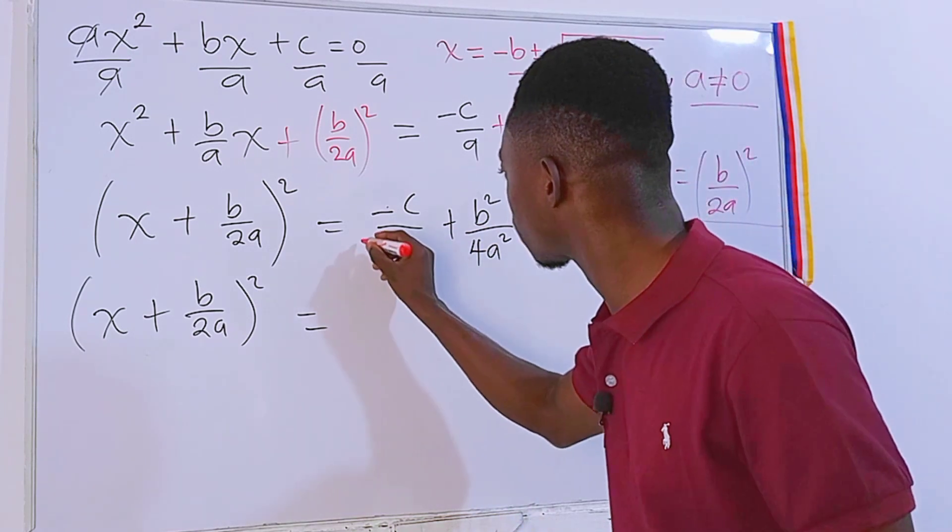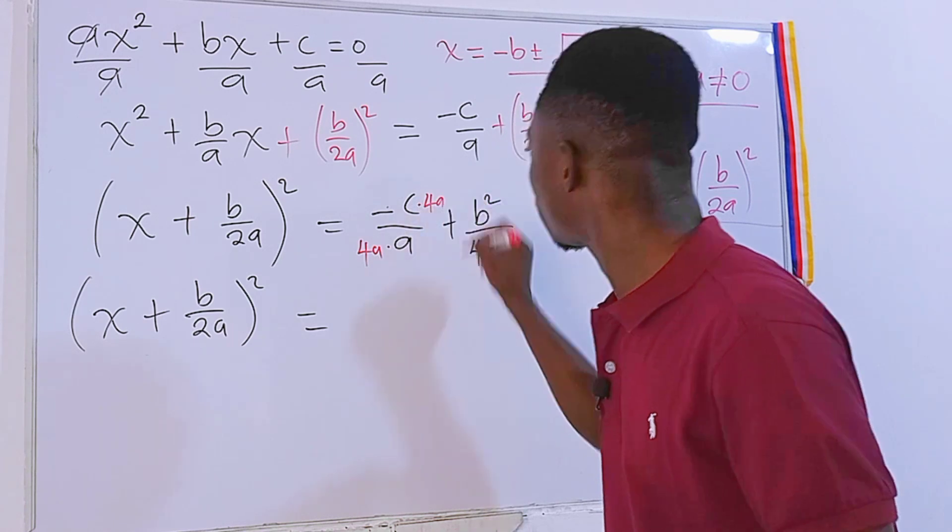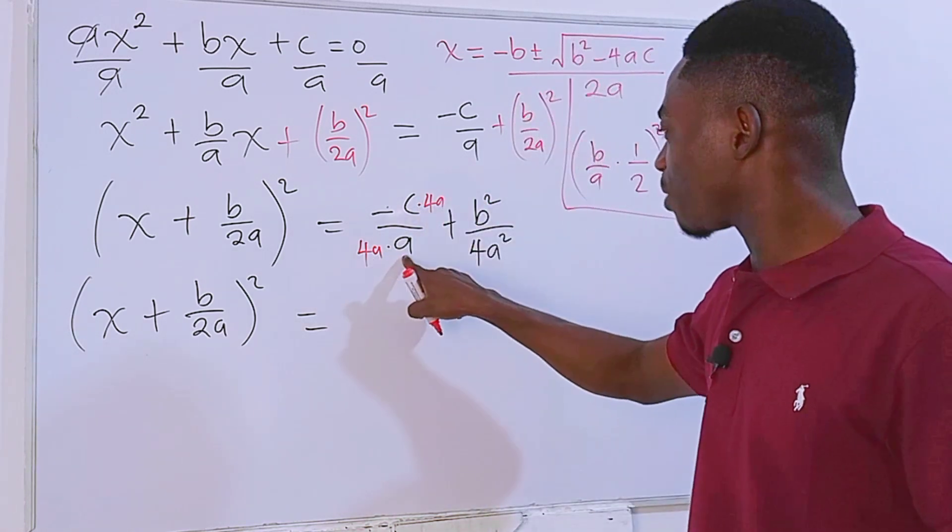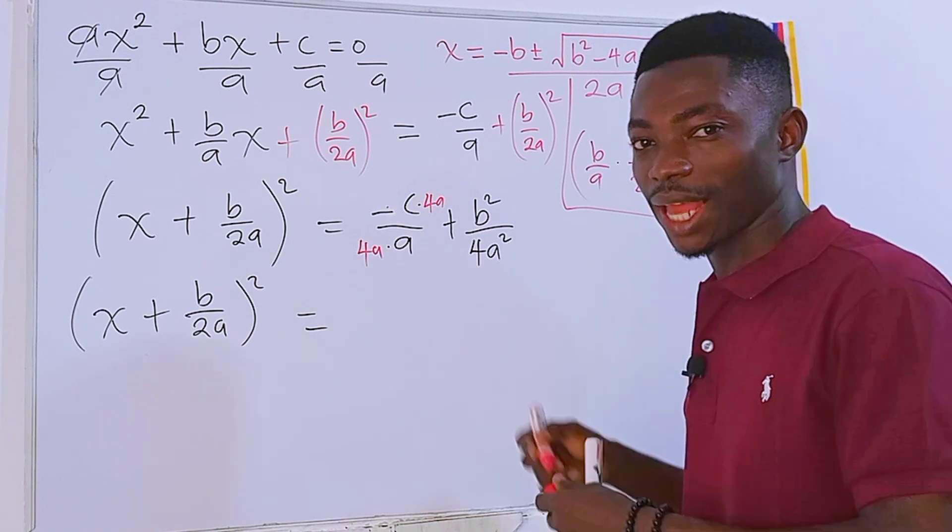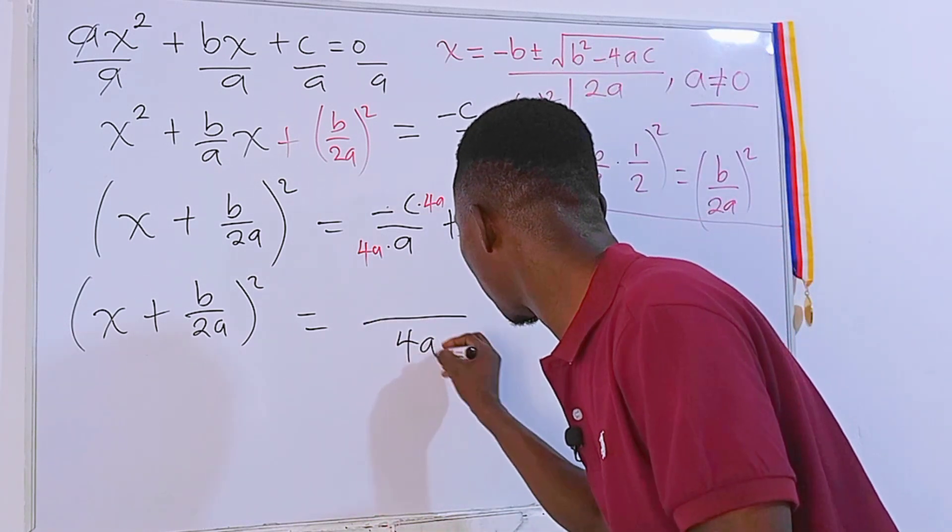Now that I'm done with the left hand side, we have to make sure their denominators are the same. So I will just have to multiply this one by 4a and then this one also by 4a. 4a times a is a squared. We have a squared also here just like that. So I will just write one of them as the LCM: 4a squared.